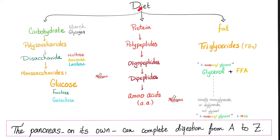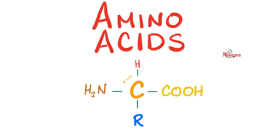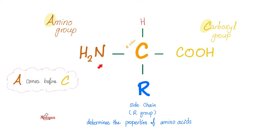Your diet is made of carbs, proteins, and fat. Proteins are the big guys; the smaller units are called amino acids. Amino acids are the building blocks of proteins. When you digest proteins, you get amino acids. Why do we call them amino acids? Because they have an amino group and a carboxylic acid group.